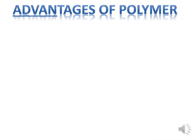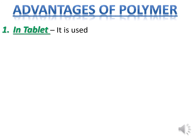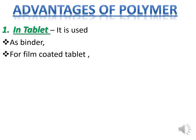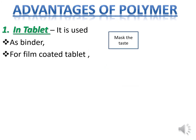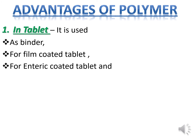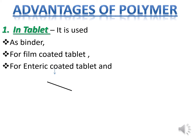Advantages of polymers: In tablets, polymers are used as binders — binders hold the ingredients in the tablet together. Second, for film-coated tablets, tablets are coated with a film of polymers to improve the appearance of the formulation and mask the taste. Third, for enteric-coated tablets, tablets are coated with polymers that do not dissolve under the acidic conditions of the stomach, allowing them to act in the intestine.